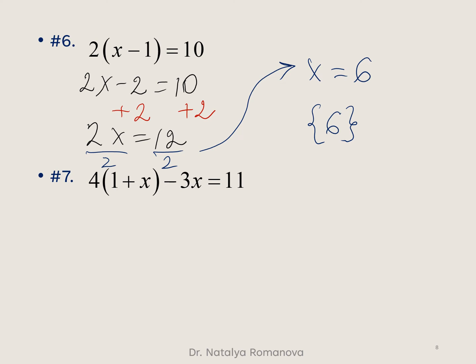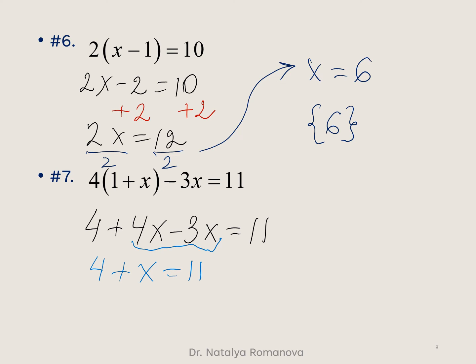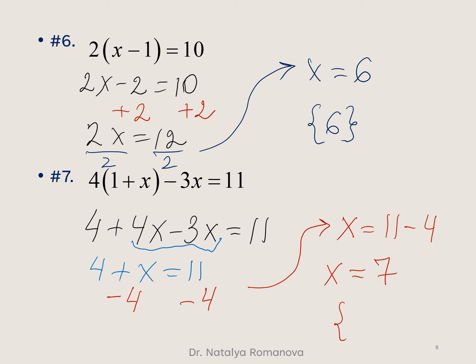For example 7, the first step is to distribute 4, giving 4 plus 4x minus 3x equals 11. We can simplify 4x minus 3x to get x, so we have 4 plus x equals 11. Then we subtract 4 from both sides, giving x equals 11 minus 4, which is 7. The answer is 7.